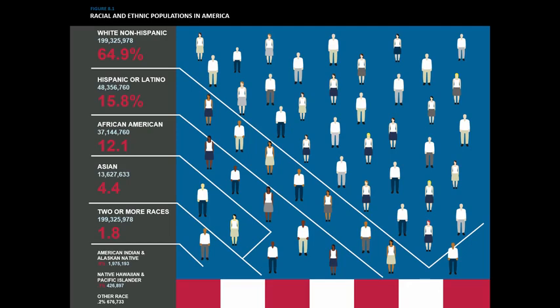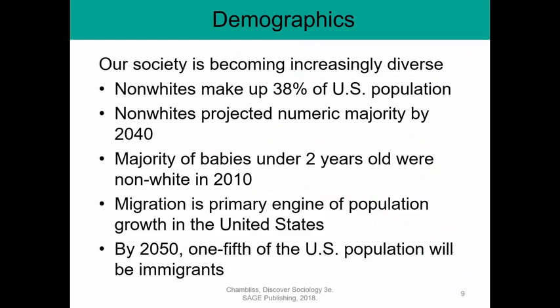The two or more races — mixed race — category is expected to change the most in the near future. It was a new category in the 2000 census. More people are identifying as mixed race partly because it is becoming a category we think more about, and also because there are more mixed-race children being born as it becomes more socially acceptable to have mixed-race romantic relationships. Our society is becoming increasingly diverse.